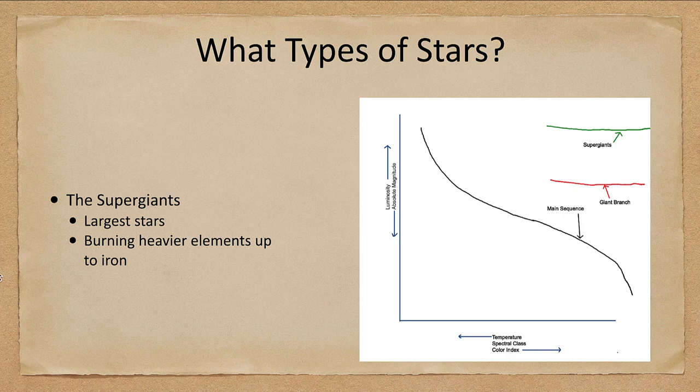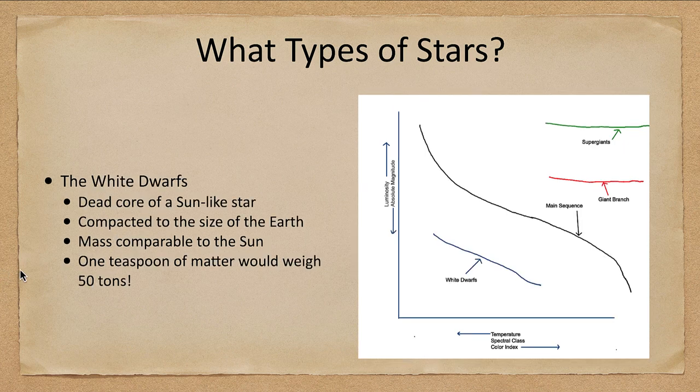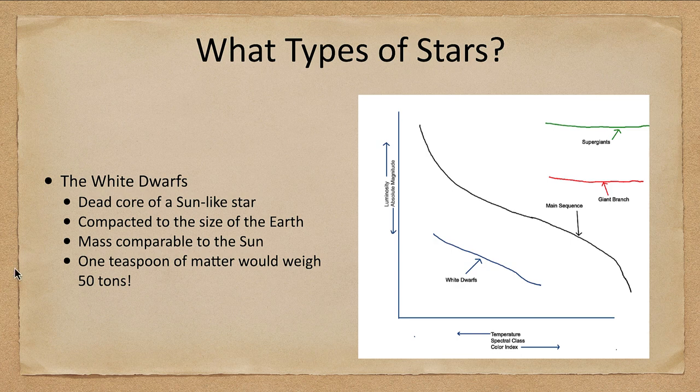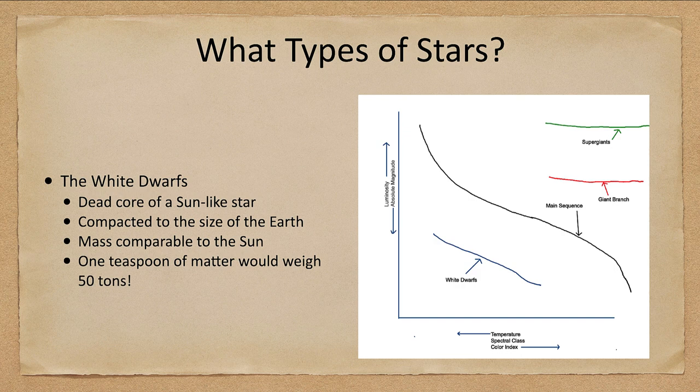Now down below the main sequence, we see the white dwarf stars. And those are stars that are much fainter than the typical main sequence stars, but they can still be very, very hot. So again, note the difference in temperatures. White dwarfs, very cool stars, very hot stars, while the giants and supergiants tend to be relatively cool.